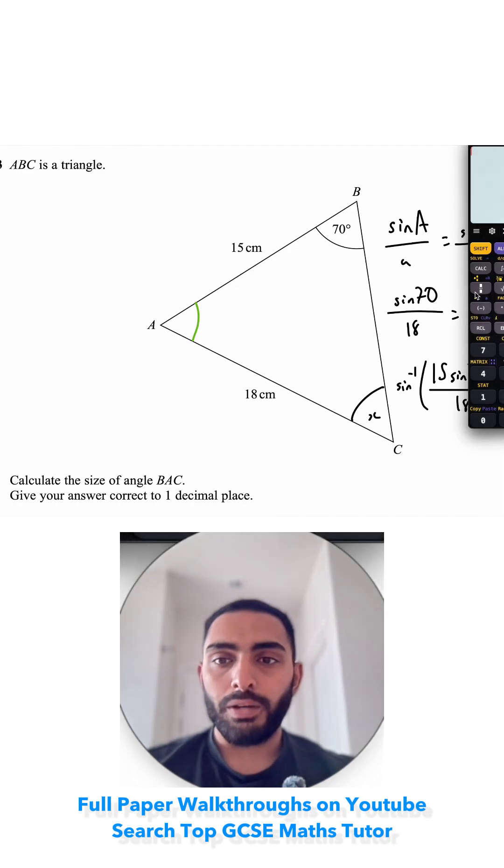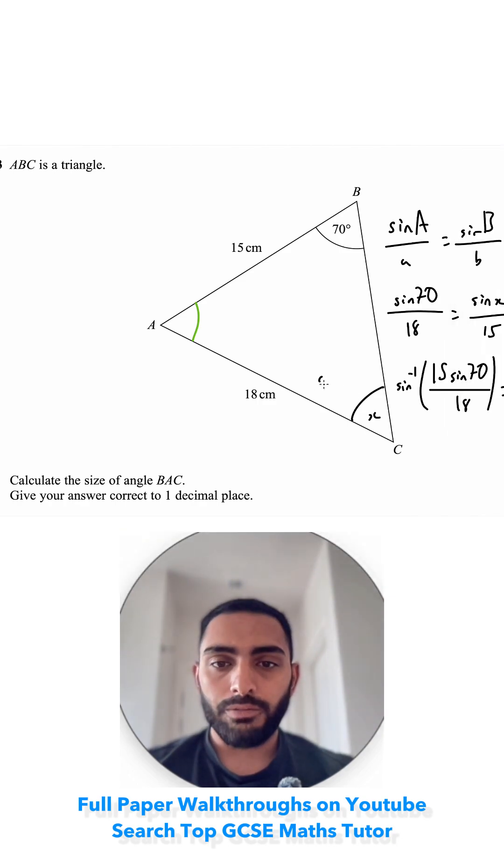Just need to type all of this in and I get my value for my angle. The inverse sine and then I need my fraction button. 15 sine 70 over 18. That's 51.543, so X is 51.543.